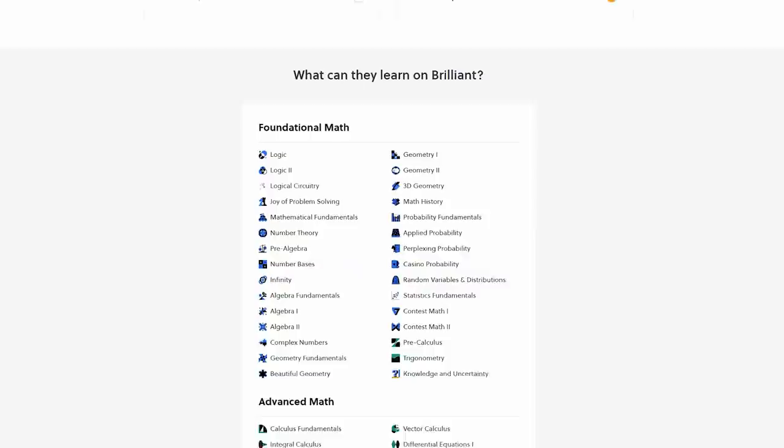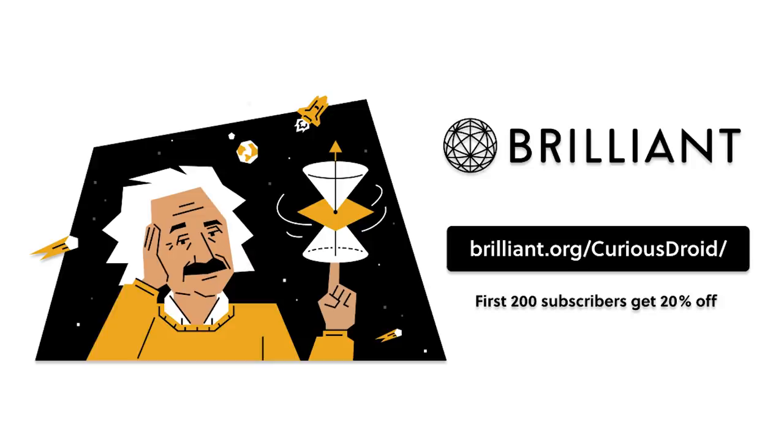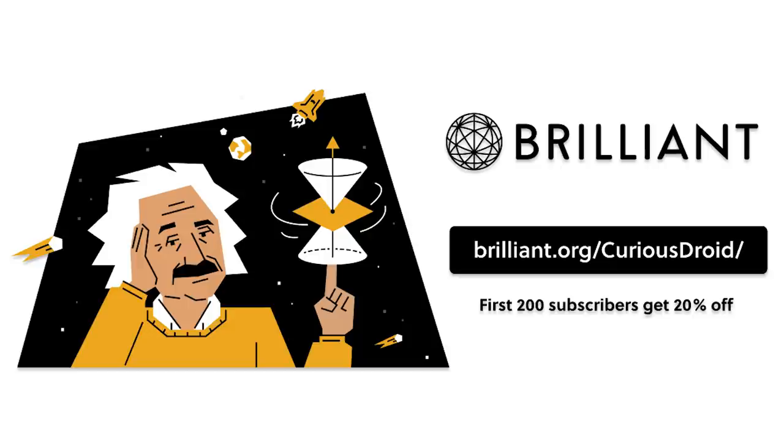So if you're stuck for a present this Christmas and you know someone who loves learning and problem solving then you could gift them a premium subscription to Brilliant. All you need to do if you want to gift Brilliant to another person or support Curious Droid yourself and get unlimited access to all of Brilliant's in-depth courses and learning is head on over to Brilliant.org forward slash Curious Droid and follow the gift or sign up link.